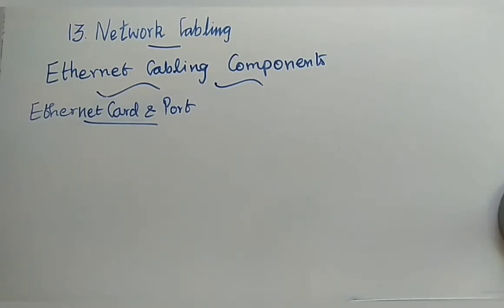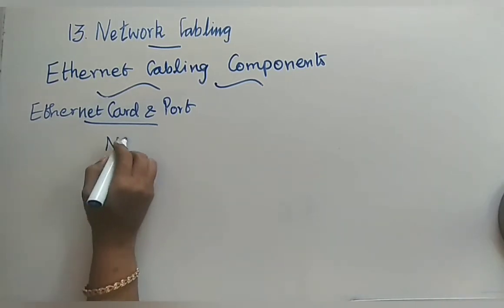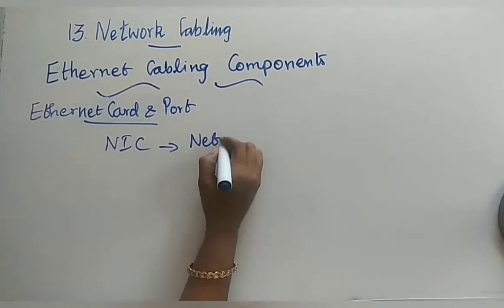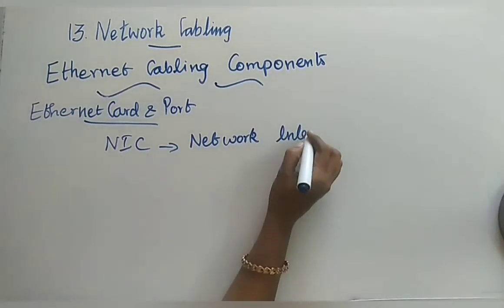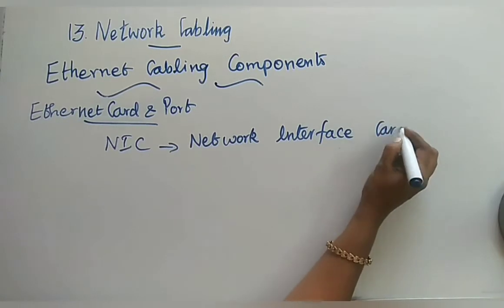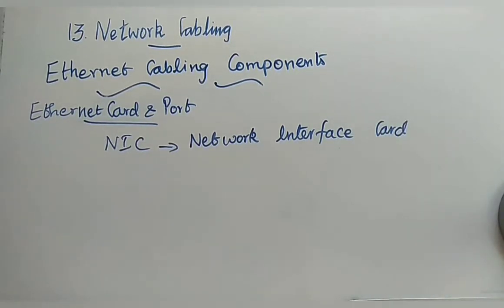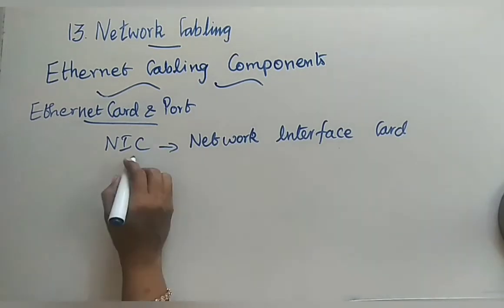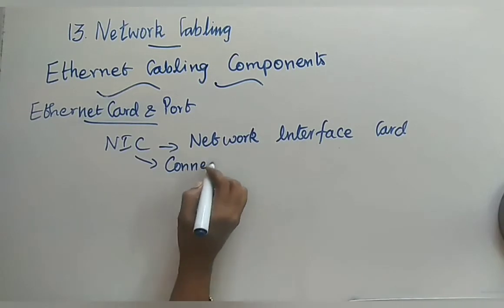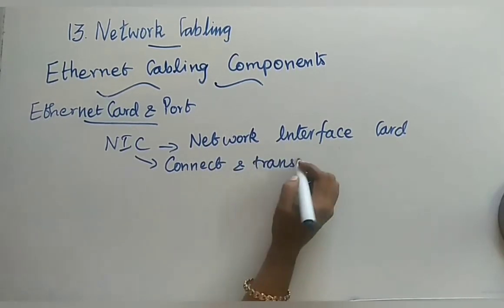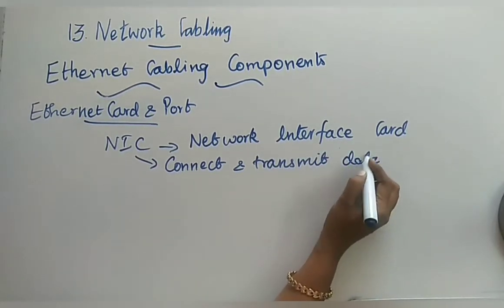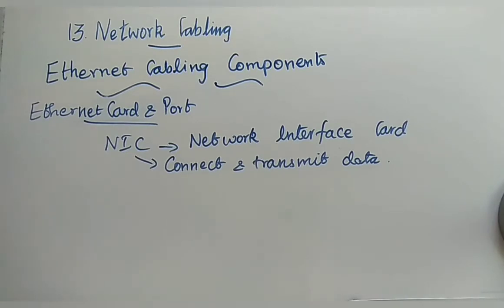During the early days, you had to purchase an external ethernet card and insert it into the slot available in your computer. This ethernet card is your Network Interface Card, or NIC. By its name, if you want a network connection you must have a network interface card — this card allows the computer to connect and transmit data.